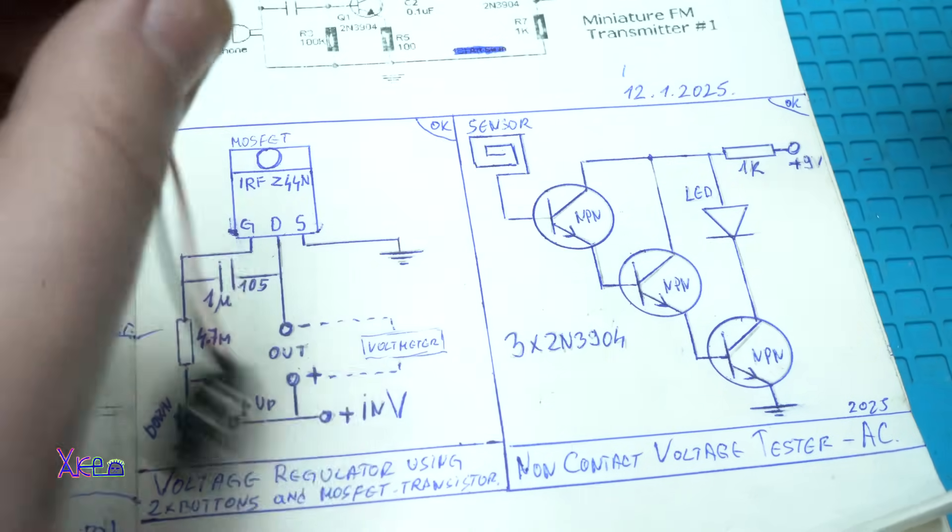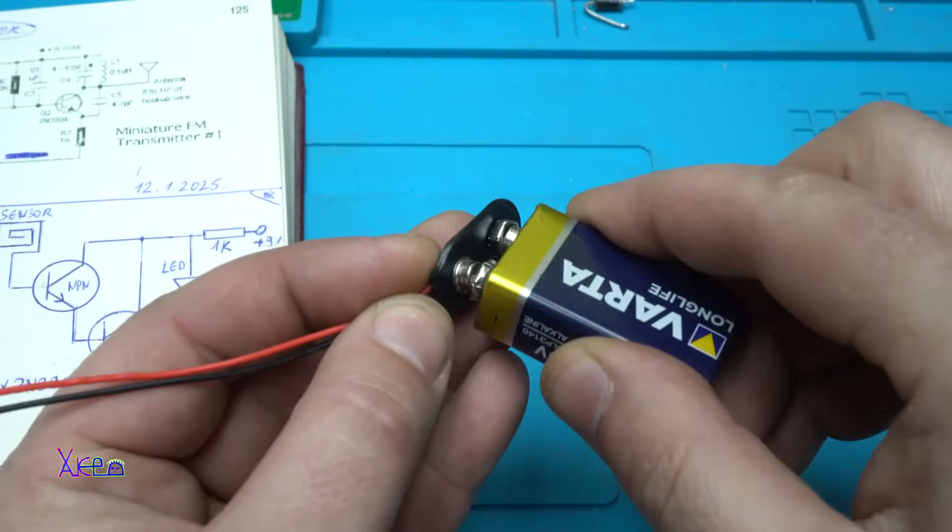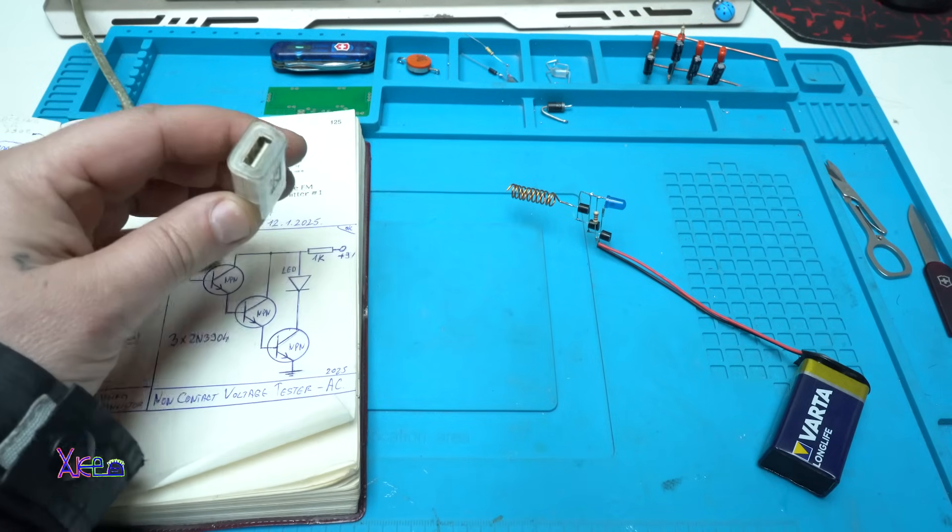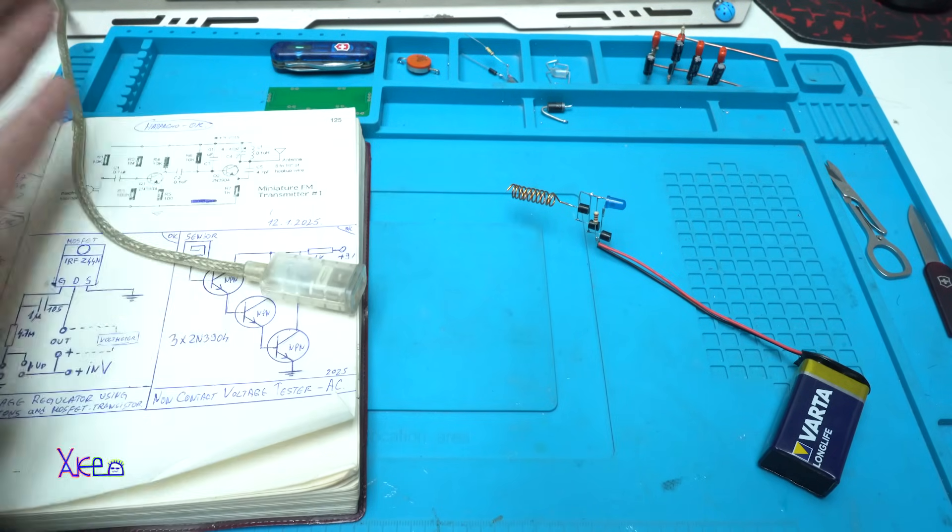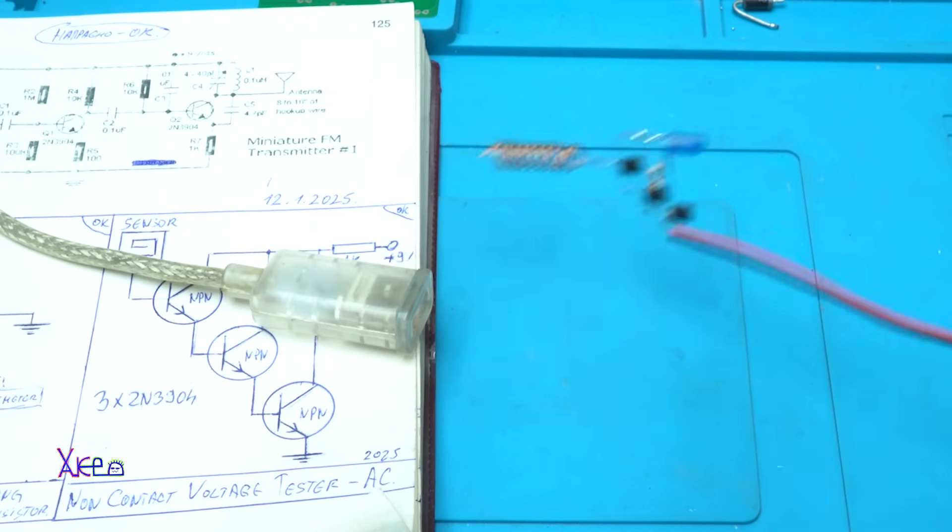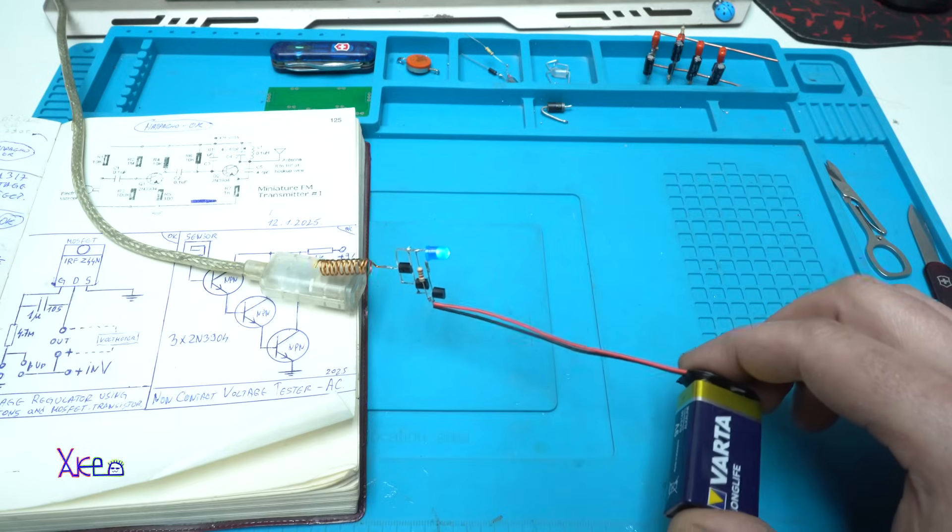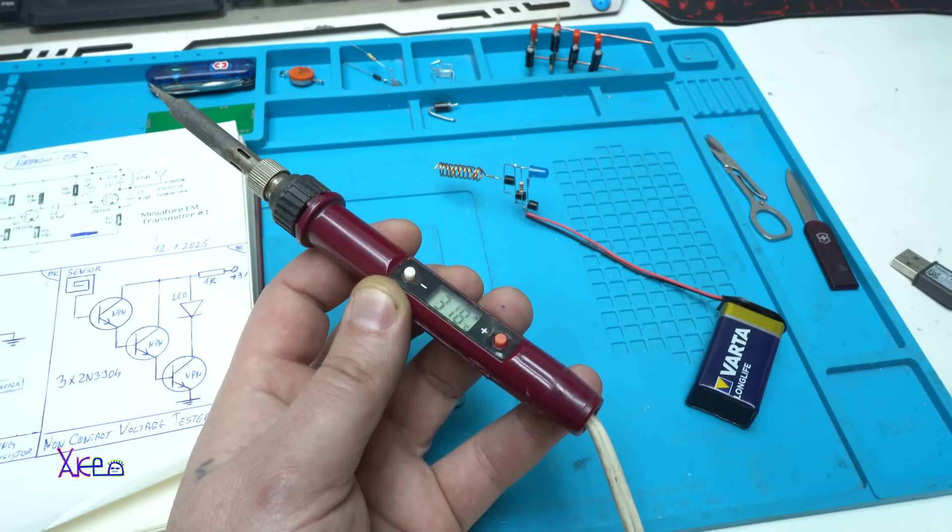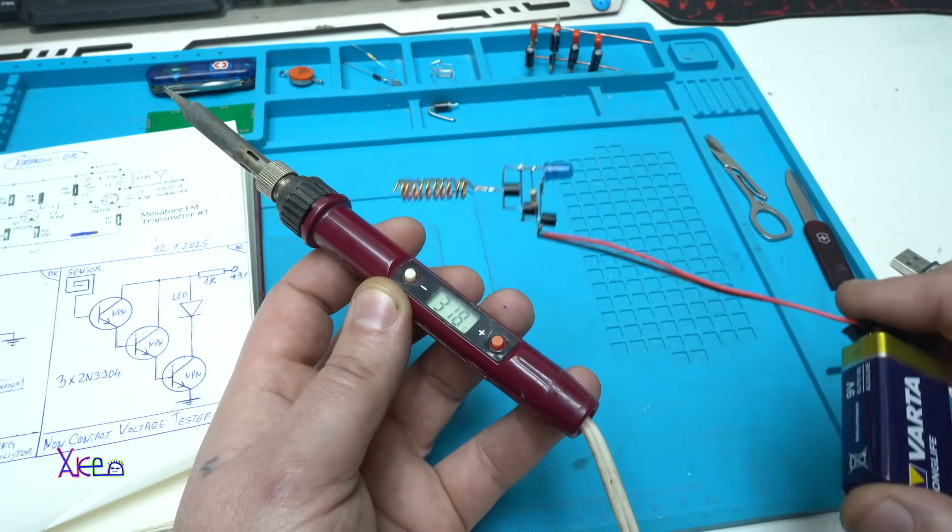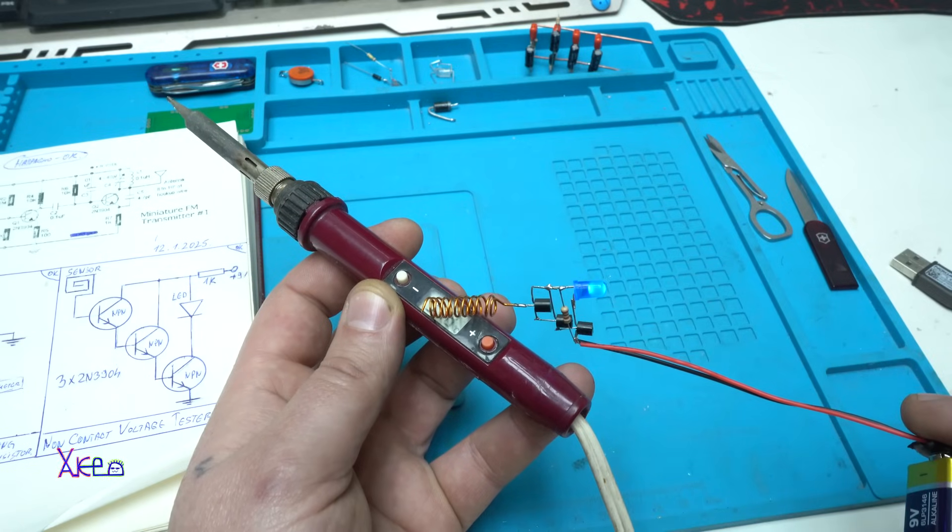Let's hook up the 9-volt battery and test it. Here I have a USB cable that is powered on, and look, it works—detects voltage, even five volts. All right, here is my very cheap soldering iron. Let's test. Yep, we have a blue light, meaning AC voltage is coming in.